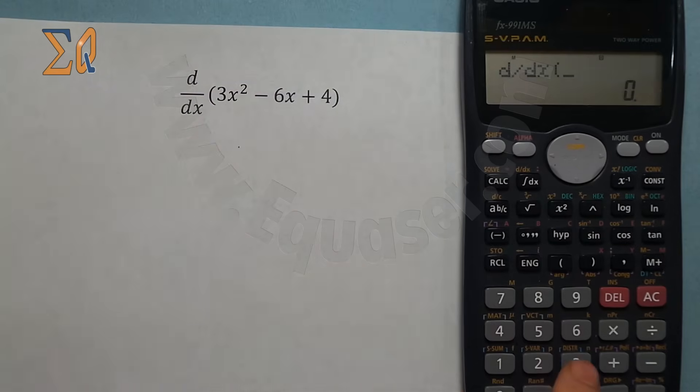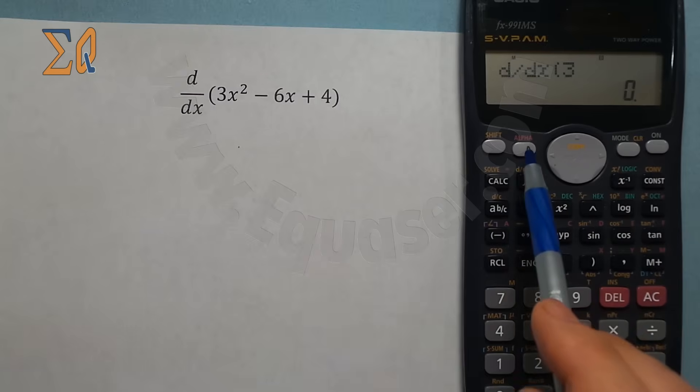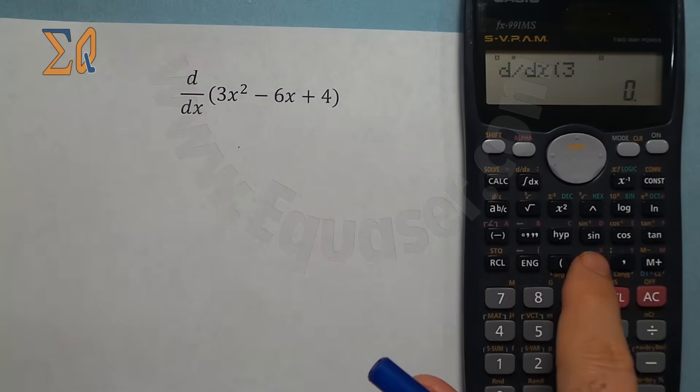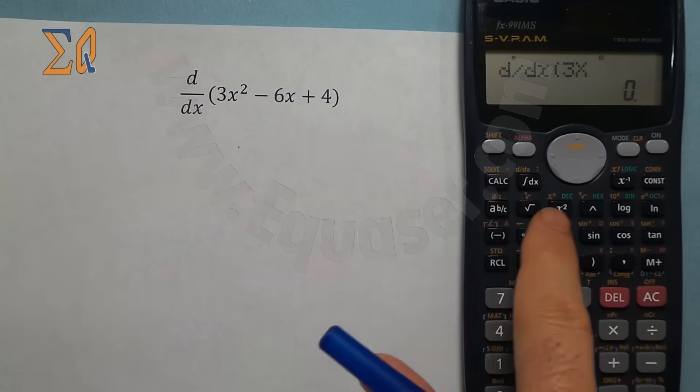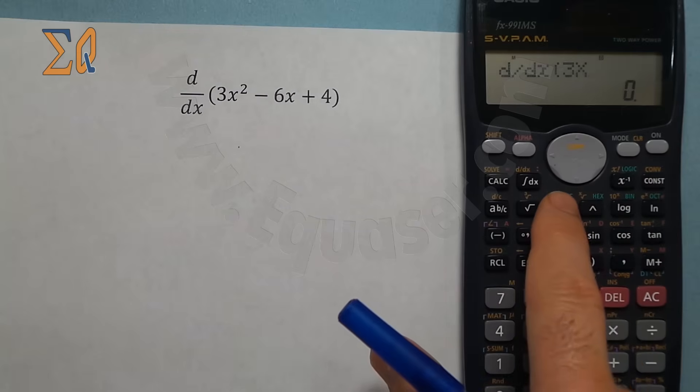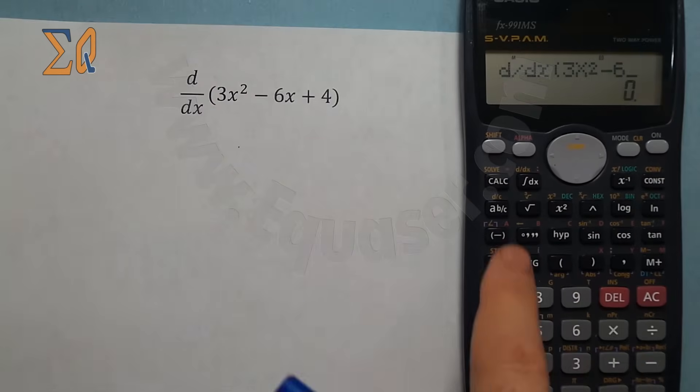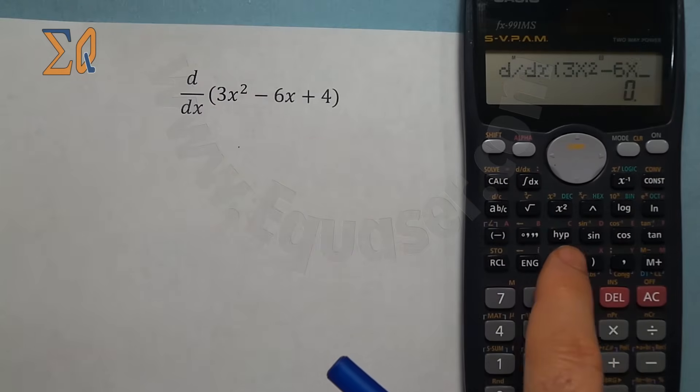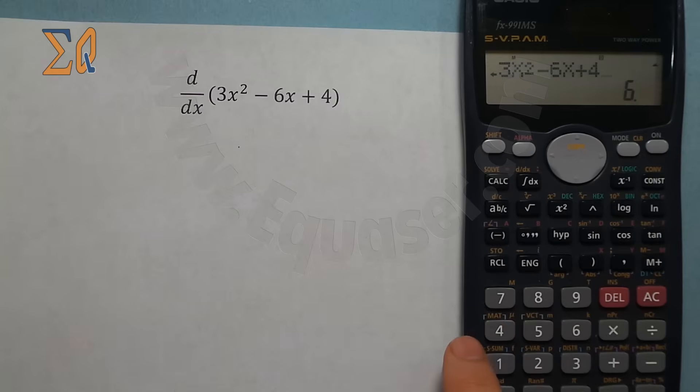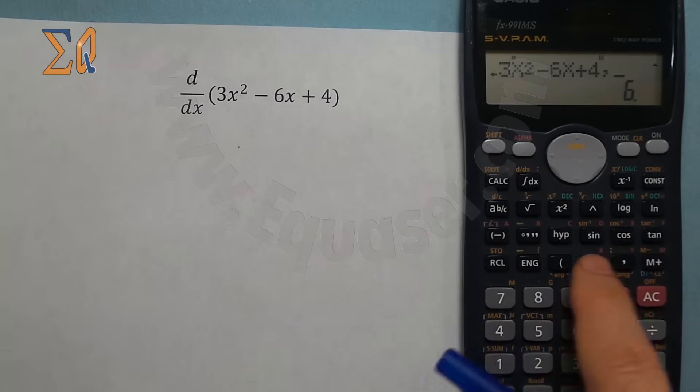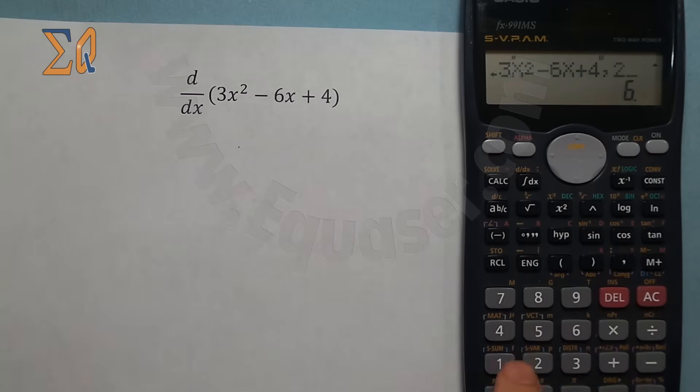3x² - I press 3, and to enter x all these reds are accessed by pressing alpha. Alpha and x squared, then minus 6 alpha x plus 4. Then for the value you want the function evaluated at, just press comma, 2, close it, and equal sign.